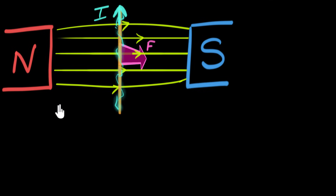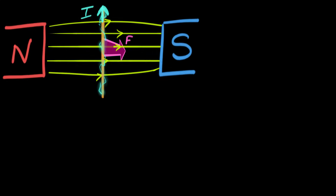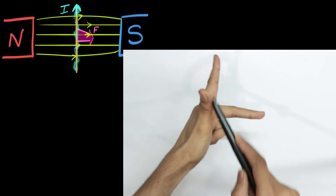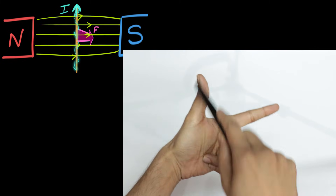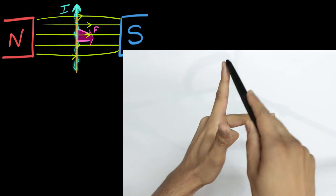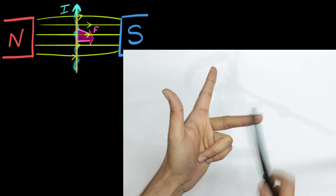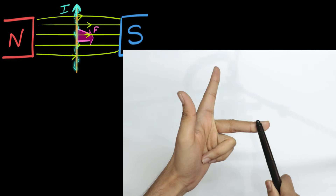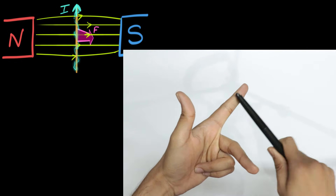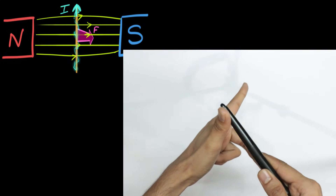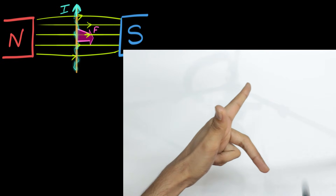It turns out there is a way to remember this, using something called Fleming's left hand rule. You bring in your left hand and stretch your thumb, forefinger, and middle finger so they are all mutually perpendicular to each other. The middle finger gives us the direction of the current, the forefinger gives us the direction of the magnetic field, and the thumb gives us the direction of the force acting on that current carrying wire.